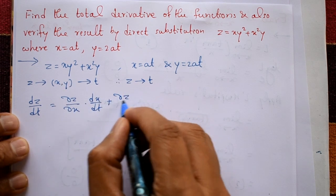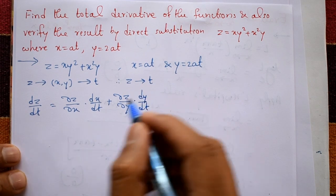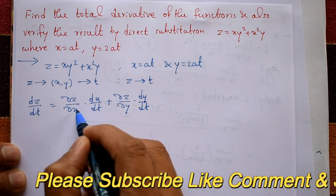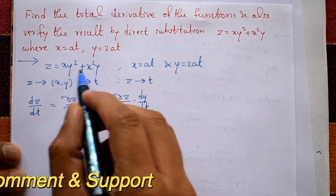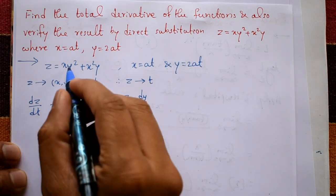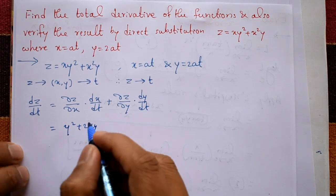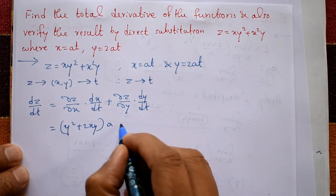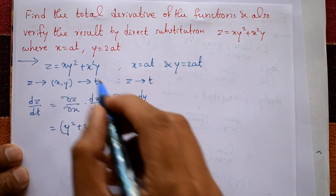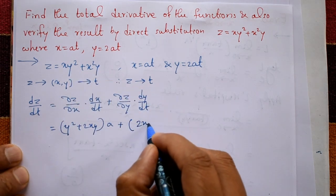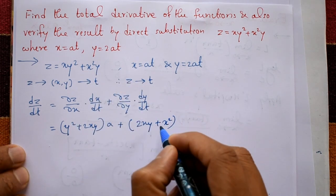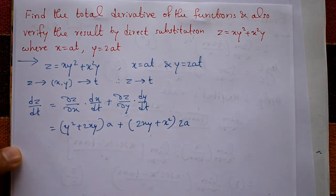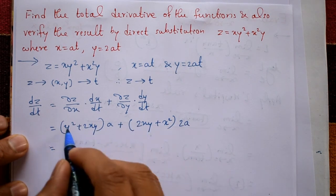Differentiating z with respect to x partially gives ∂z/∂x = y² + 2xy. Then dx/dt with respect to t gives just a. Differentiating z with respect to y partially gives ∂z/∂y = 2xy + x². And dy/dt gives 2a.